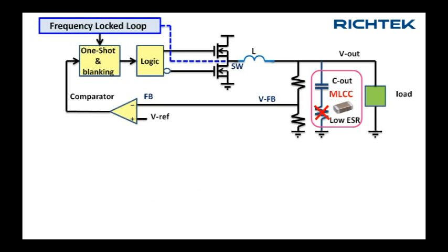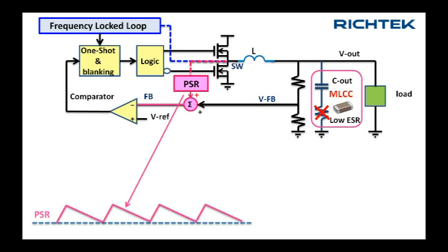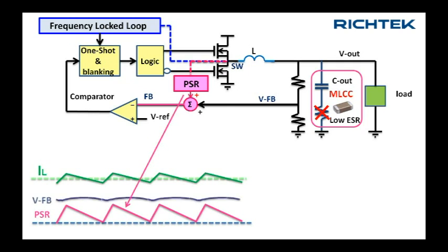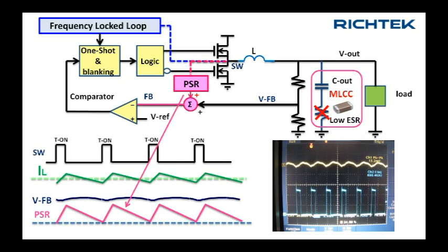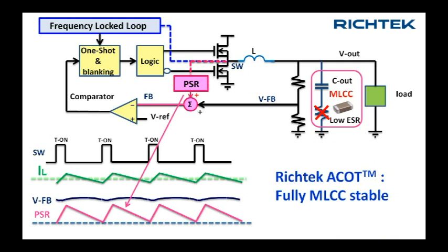In order to work with low-cost ceramic capacitors, RichTech's advanced COT has an internal pulse-shaping regulator circuit which generates an internal sawtooth with the same shape as the inductor current. This sawtooth is added to the feedback signal and provides the required ripple voltage for stable COT operation. Now the circuit operation no longer depends on the output voltage ripple, and is stable with very low ESR ceramic capacitors.